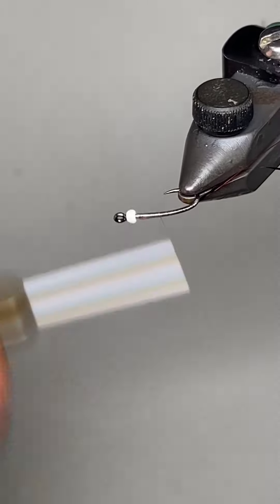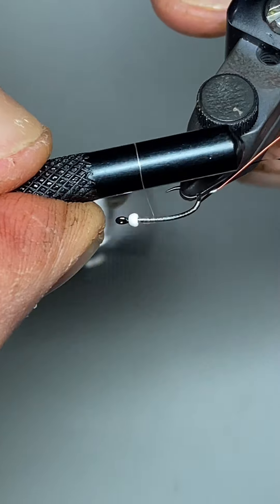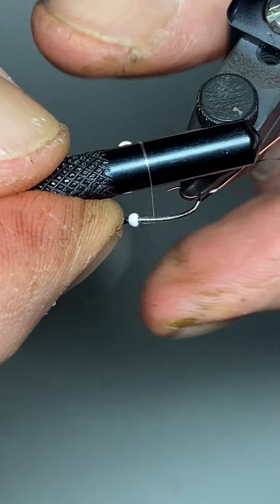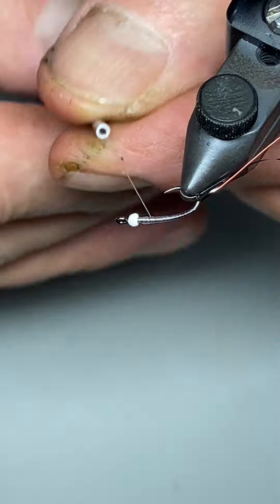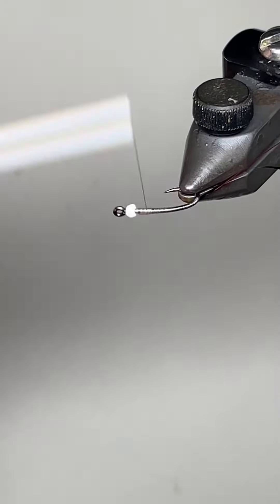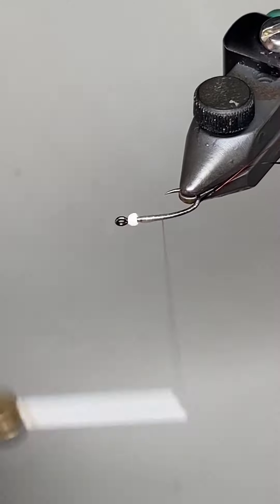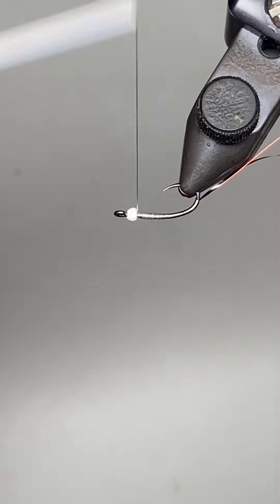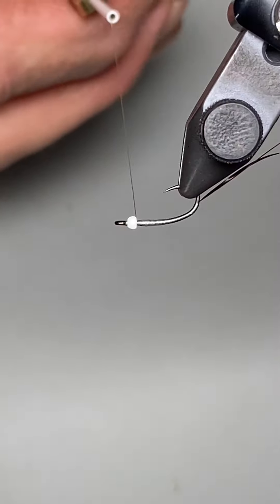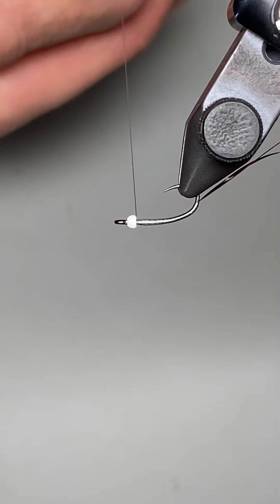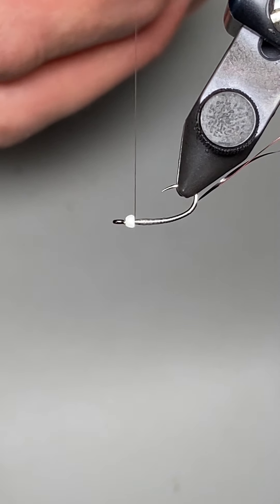Now I can tell that my thread is starting to cord up a little bit. So I'll go back, counterspin and it starts to flatten out right about there. So it doesn't take long but it's really important to do. So there's the profile. It's still very slender but it's got a nice taper from the bead down to the hook point.